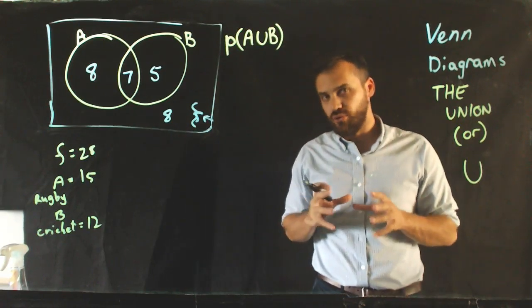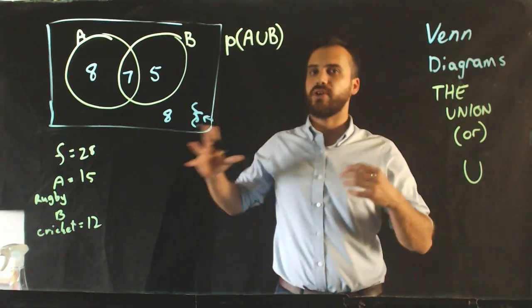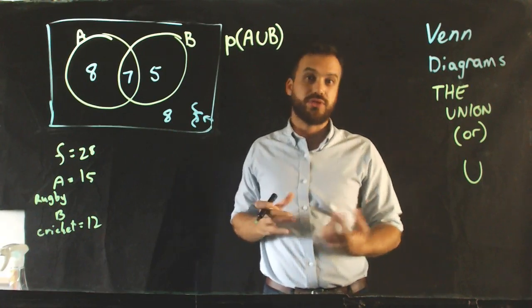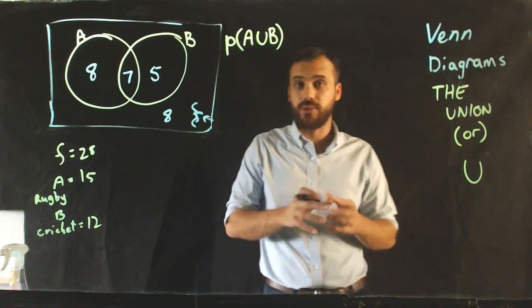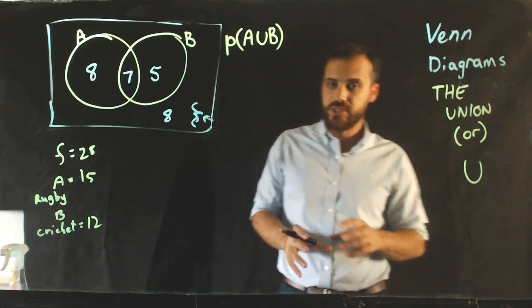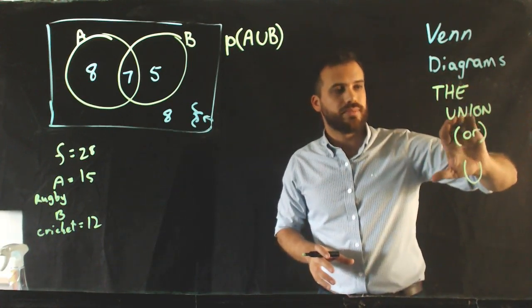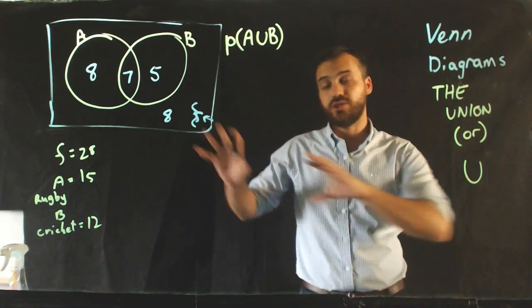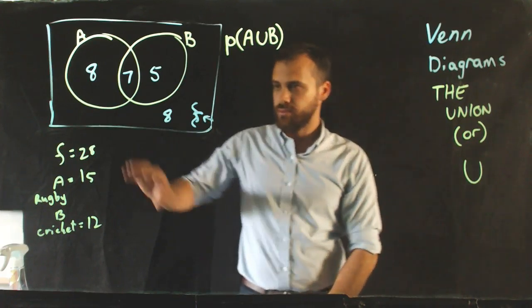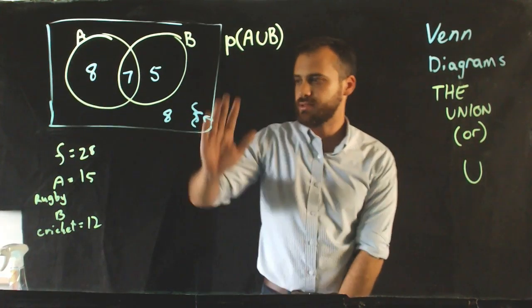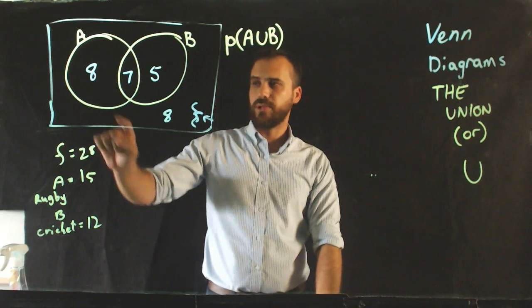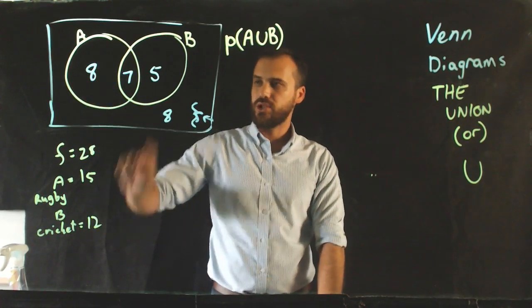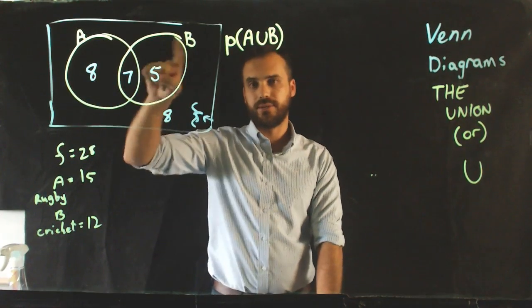Now, there is a really nice formula for this that steps itself outside of Venn Diagrams and does a bunch of other cool stuff as well. So, we're going to learn that formula. But first of all, what do we mean by the union, or or, in terms of this Venn Diagram? Remember, we had 28 people in a class. 15 of them were playing rugby, this section here, and 12 of them were playing cricket, here.